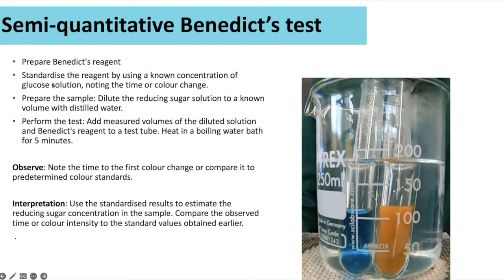For the semi-quantitative Benedict's test, prepare Benedict's reagent and add it to a known concentration of glucose, noting the time taken for the colour change to occur. You can dilute the reducing sugar solution to known volumes using serial dilutions to create a series of known glucose concentrations. Perform the Benedict's test on each, time the colour change, and plot as a graph — making it semi-quantitative.